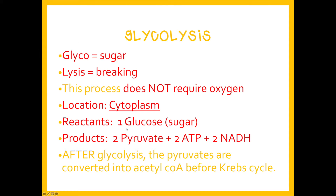In glycolysis, glucose is the reactant — glucose is your sugar molecule. At the end of glycolysis you're making two pyruvate molecules, two ATP or energy molecules, and two NADH. The biggest one to remember is the two ATP molecules. The net yield — the total amount of ATP produced — is two, and you do need to remember that.